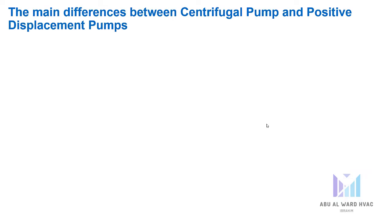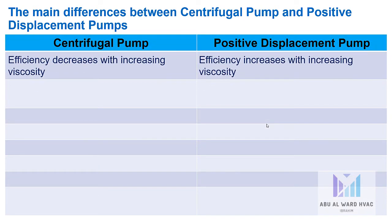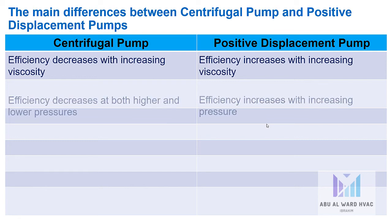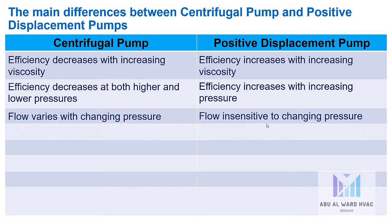Here are the main differences listed in a summary table. Centrifugal pump efficiency decreases with increasing viscosity, while positive displacement pump efficiency increases with increasing viscosity. Centrifugal pump efficiency decreases at both higher and lower pressures, while positive displacement pump efficiency increases with increasing pressure. Flow varies with changing pressure in centrifugal pumps, but is insensitive to changing pressure in positive displacement pumps.